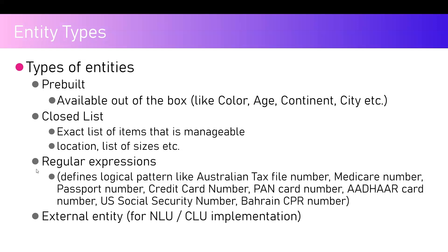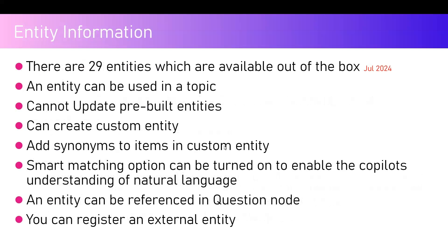Third is a regular expression entity — useful for validating information like passport numbers, which differ across nations. Australian passport numbers differ from US or Indian ones. India has PAN card and Aadhaar card identifiers; the US has a Social Security Number; Bahrain has a CPR number. You can create these as regular expressions and utilize them in your application. Fourth is an external entity, primarily used for Conversational Language Understanding or Natural Language Understanding, which will be covered in a separate video.